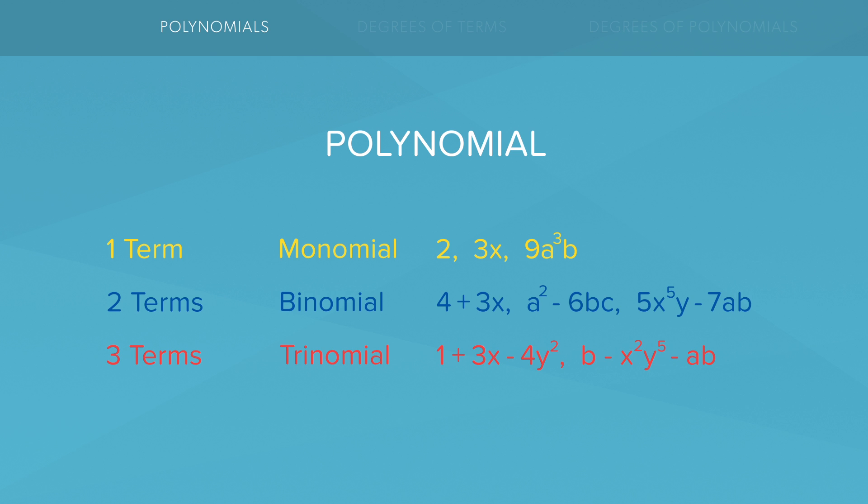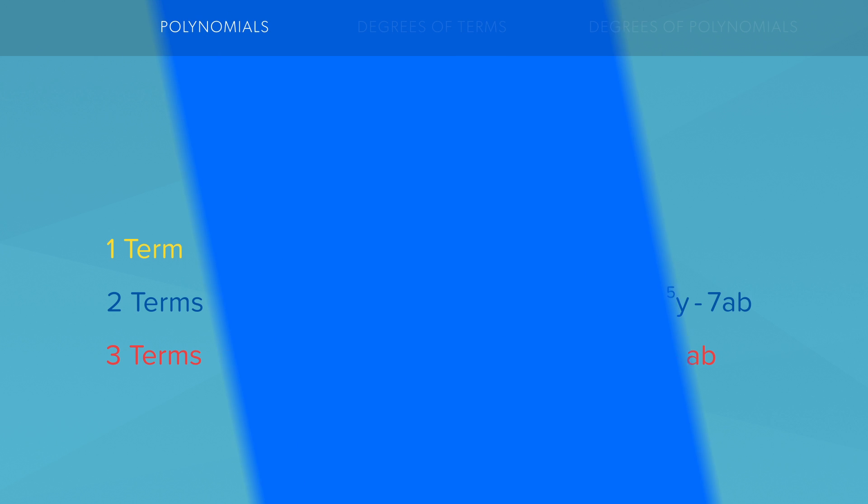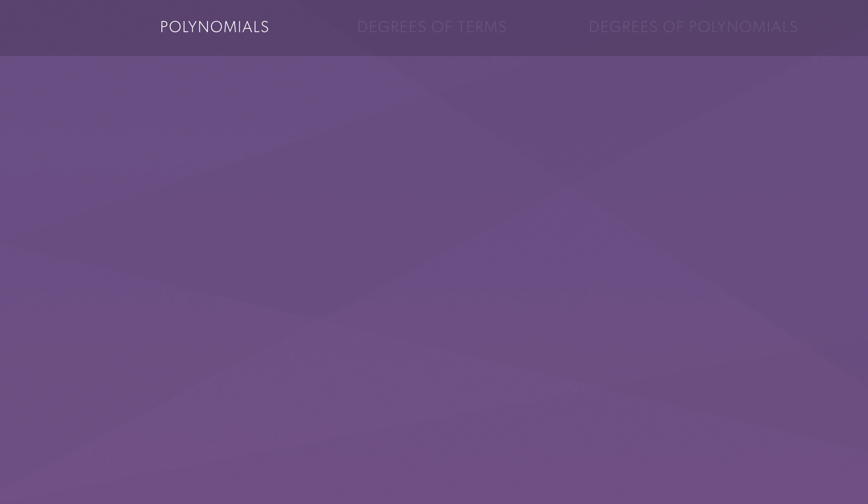Great! So now that we know that polynomials are essentially built up with a bunch of terms or perhaps just one term, let's move on to the idea of finding the degree of a term.